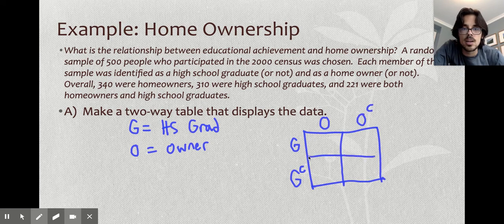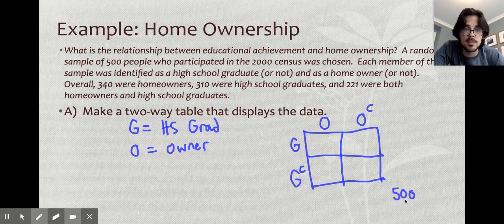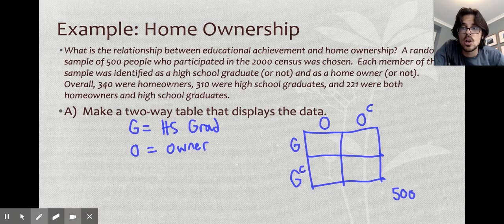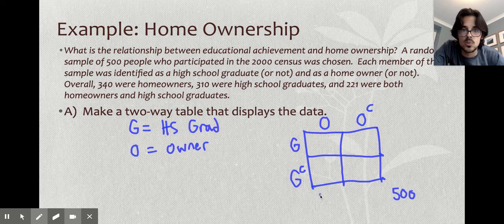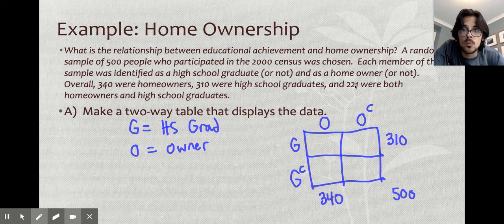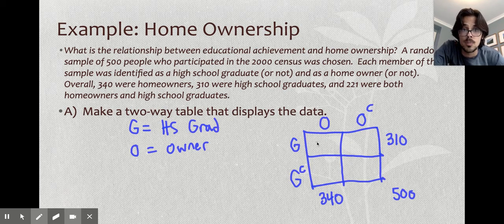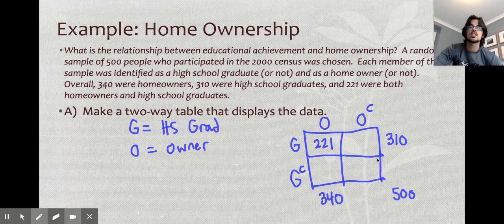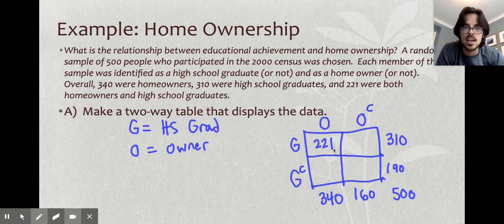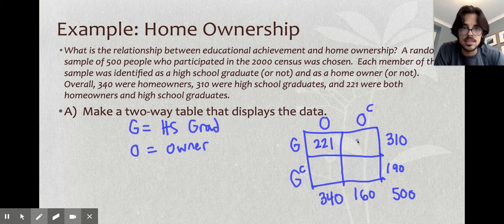I'm going to do is break the problem up, the numbers in here, and put them in the different boxes. It says there's a random sample of 500 people. The grand total usually goes bottom right outside the box, kind of like a marginal distribution where you put it on the outside. And then I'm going to start filling out the problems with the numbers they give me. 340 people were homeowners. Owners, this and this together are homeowners. There's 340 of them. There are 310 high school graduates and it says 221 were both homeowners and high school graduates. So the way these problems usually work is they'll give you the outside numbers. They have to give you at least one on the inside for the problem to be possible.